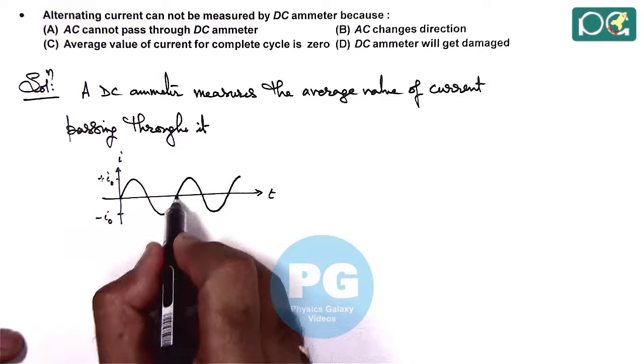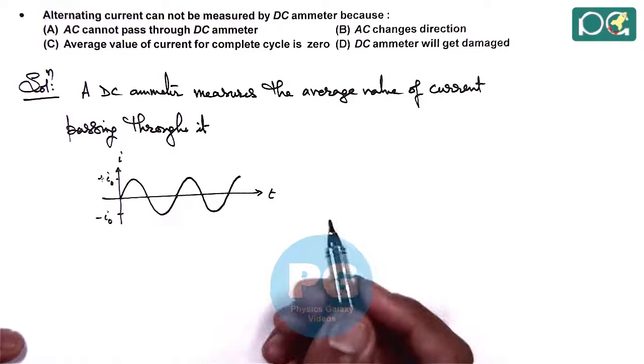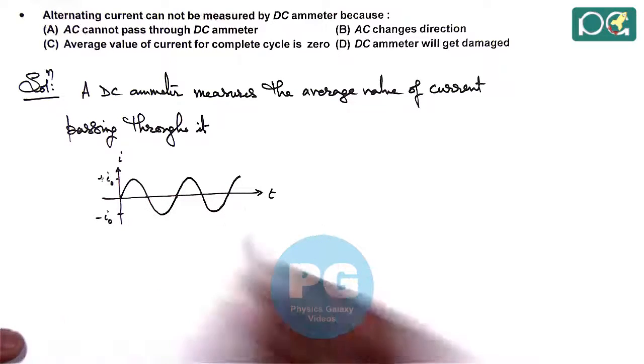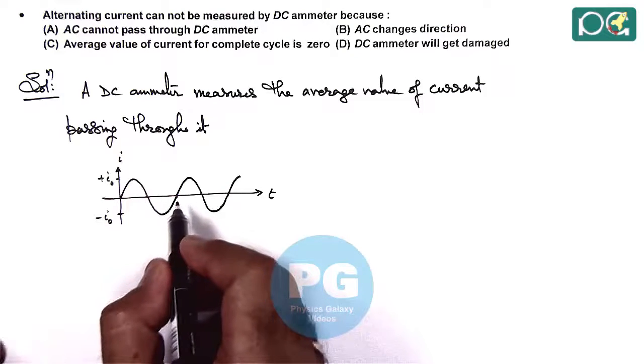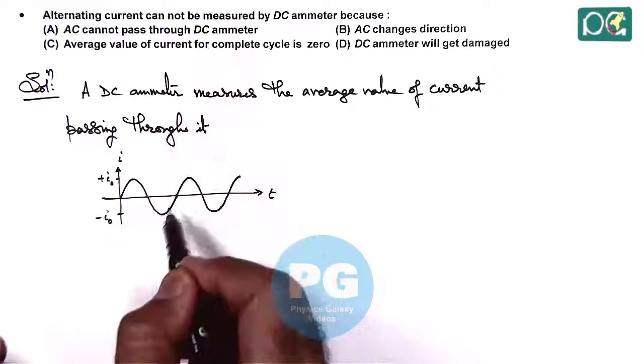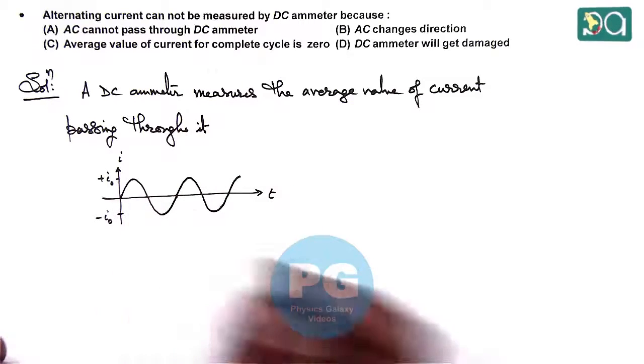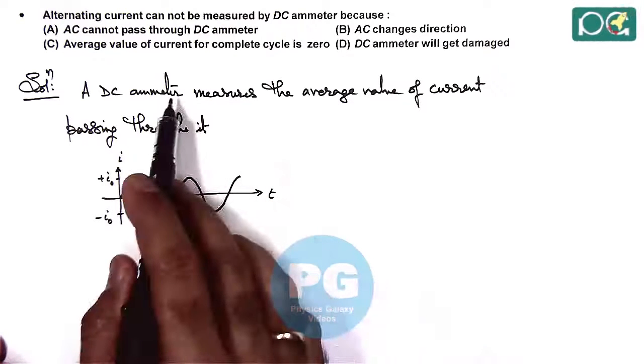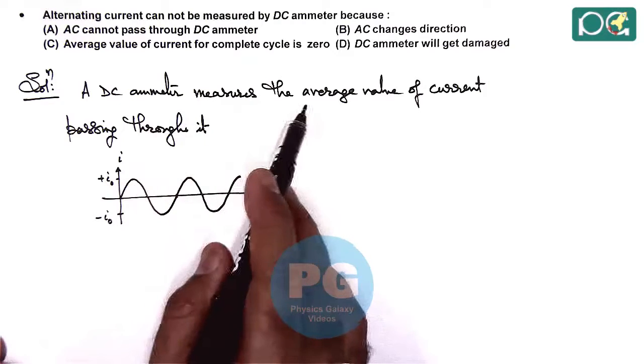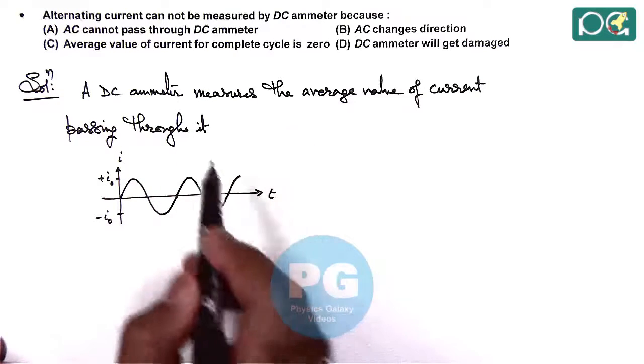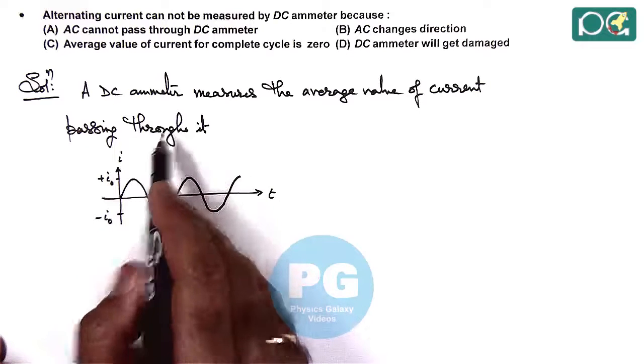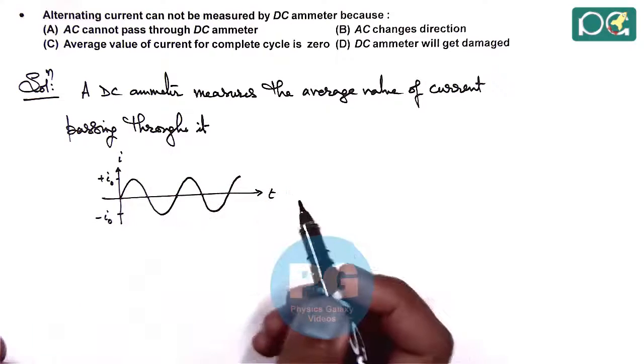Then the average value over a cycle, and the frequency is considered to be very high, the value cannot be measured because on an average the charge passing through the DC ammeter will remain zero over a complete cycle because DC ammeter basically measures on the basis of the magnetic torque acting on the current carrying coil.